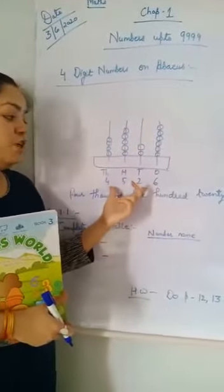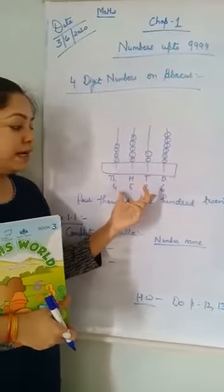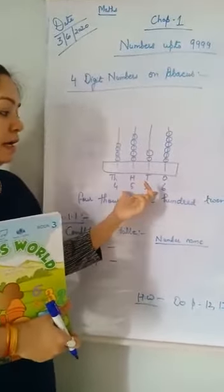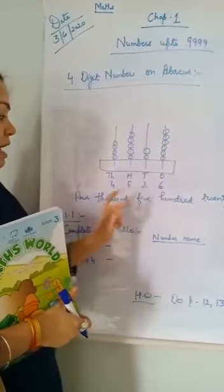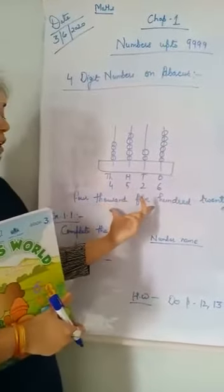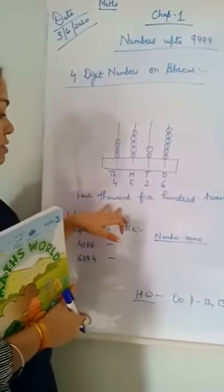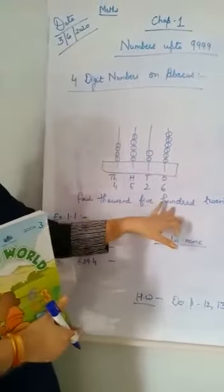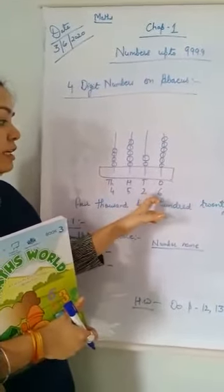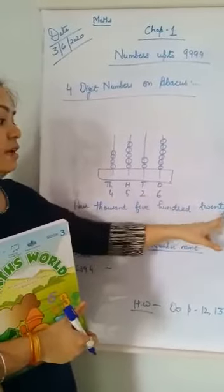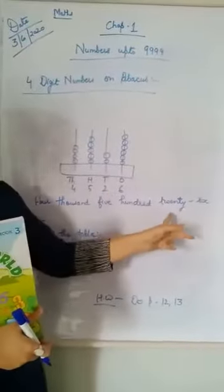So when you have to write the numbers — the number name — means this number is written and you have to write the number name. Then you will write: four thousand five hundred twenty-six. You will write like this.